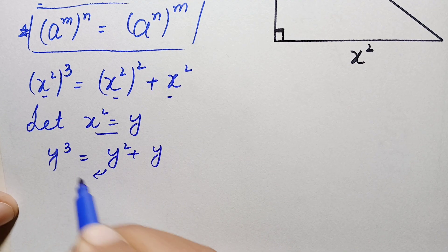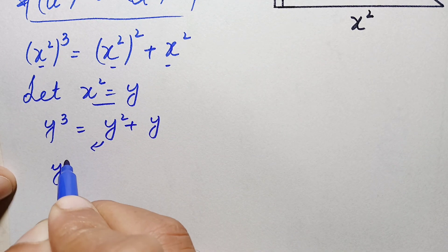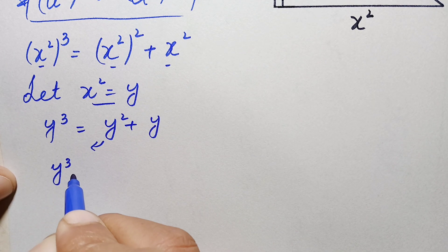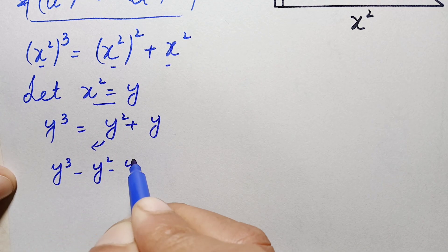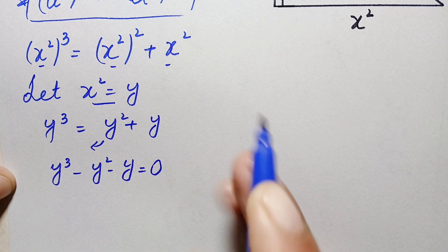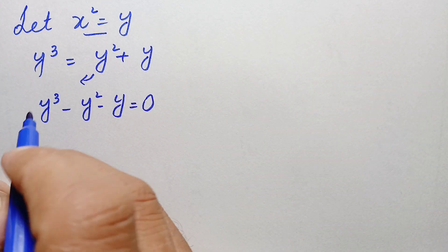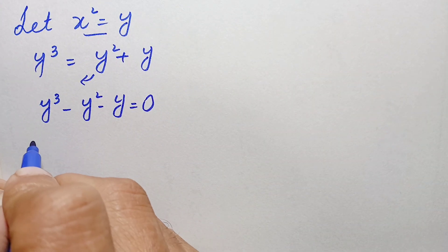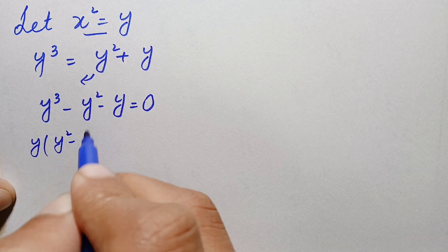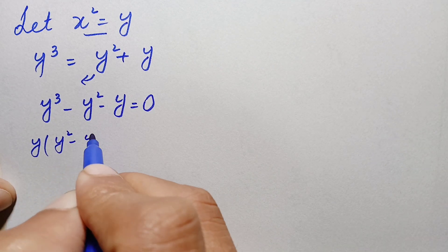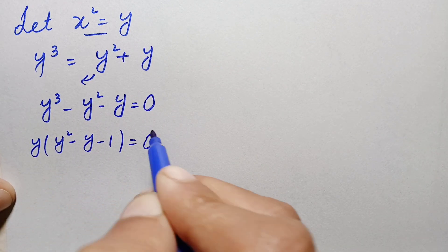We take both terms on the right-hand side to the left-hand side, giving: y³ − y² − y = 0. Taking y as a common factor from the left-hand side, this becomes: y(y² − y − 1) = 0.